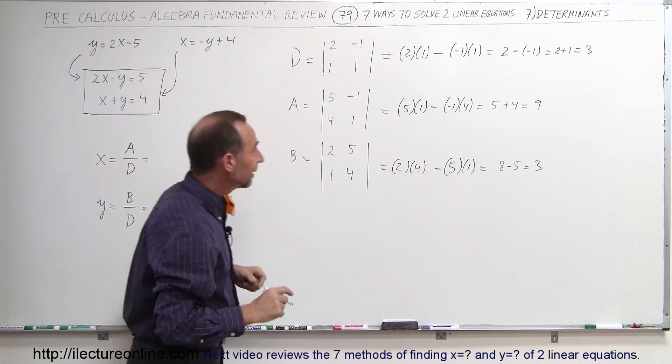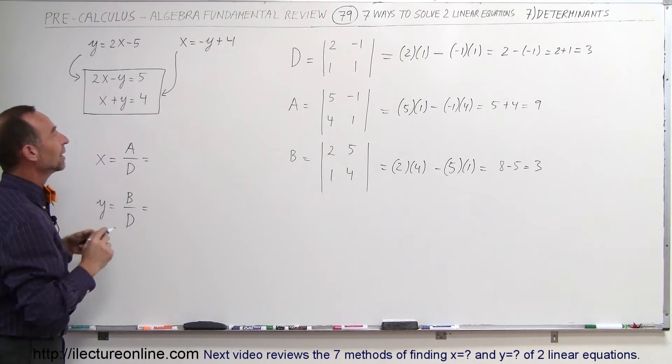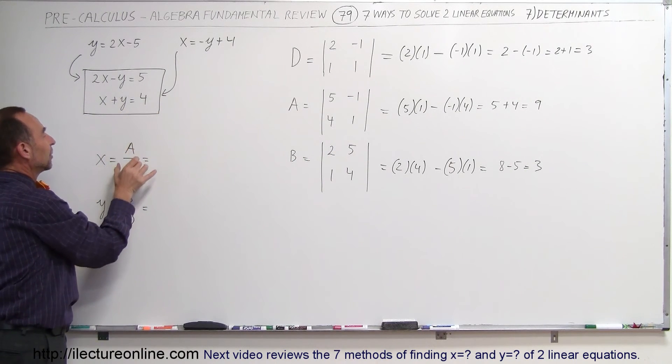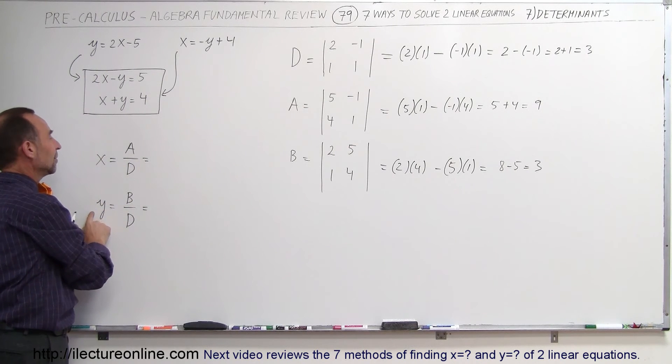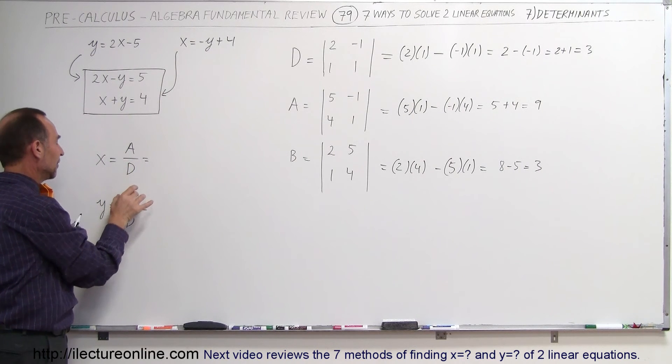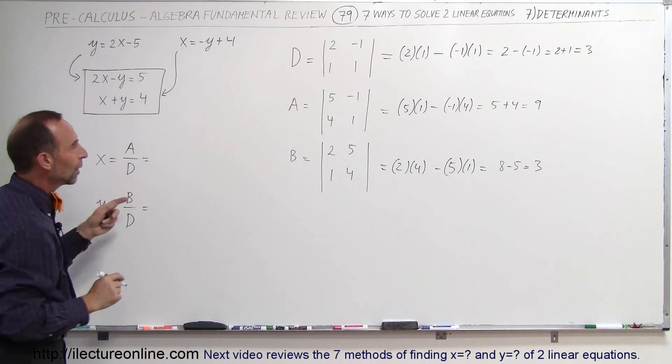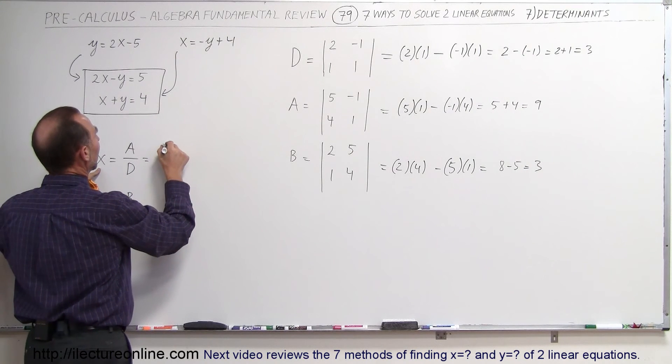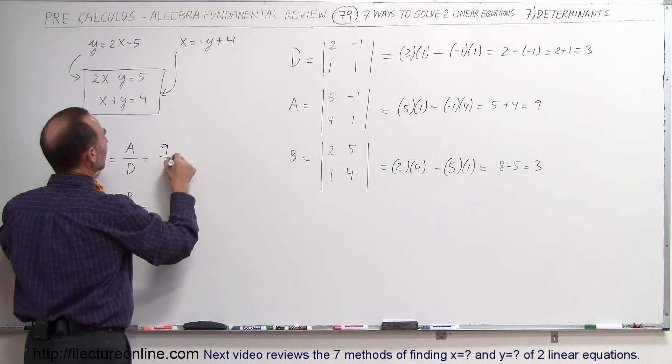Now we know that the x value can be found by taking the determinant A divided by determinant D and the y value can be found by taking the determinant B divided by the determinant D. So x then becomes A, which is 9, divided by D, which is 3, which is equal to 3.